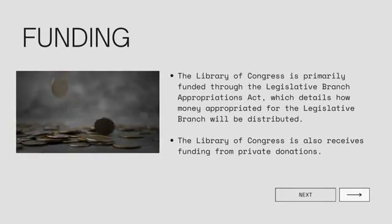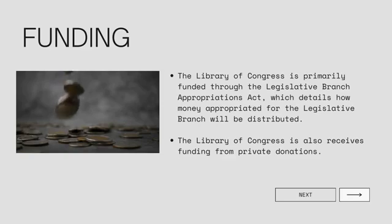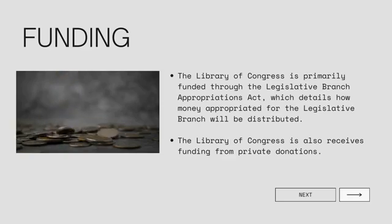Funding is secured for the Library of Congress in two ways. The first is through the Legislative Branch Appropriations Act, which details how money appropriated for the legislative branch will be distributed. The Library of Congress also receives funding from private donations, and in recent years those private donations have been increasing.